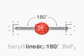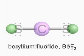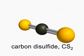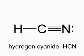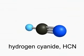Electron groups can be single bonds, as in gaseous beryllium fluoride, double bonds as in carbon disulfide, triple bonds as in hydrogen cyanide, or as you will see shortly, lone pairs.